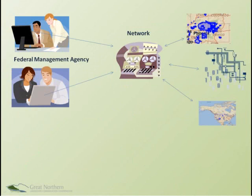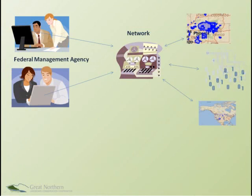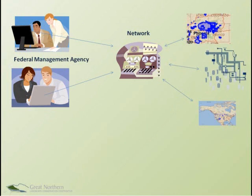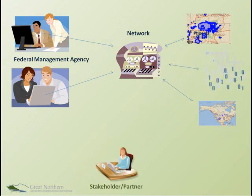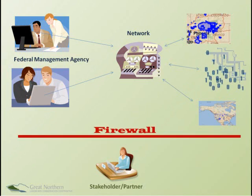The old way of doing things — back in the 1990s — had researchers and managers working on their own particular things. GIS specialists and modelers worked on individual issues and delivered publications or management plans. Because the communication pieces weren't in place the way we wanted, there was a lot of stove-piping going on. We recognized that this model isn't going to help us solve large landscape and multi-disturbance issues.